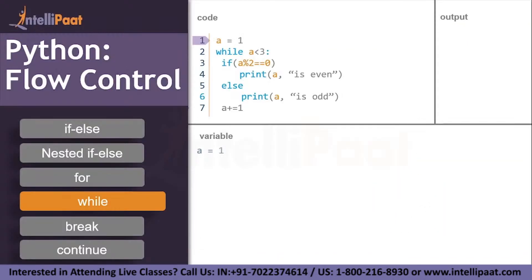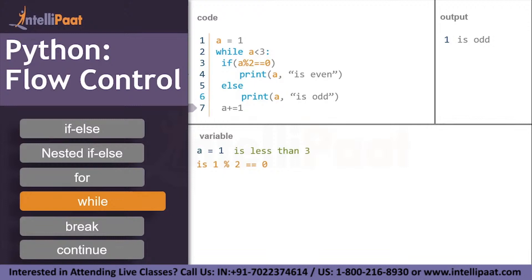Let's continue with another example. Set a equal to one. Check the condition: while a is less than three — is one less than three? Yes, condition is true. Inside the while part, check: if a mod 2 equals zero — is one mod 2 equal to zero? No, the condition is false. So we jump to the else part and print 'a is odd.' Since a is currently one, output is: one is odd. Then increment a by one, so a becomes two.